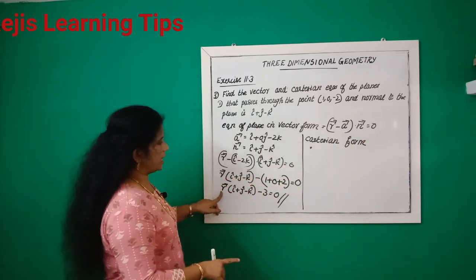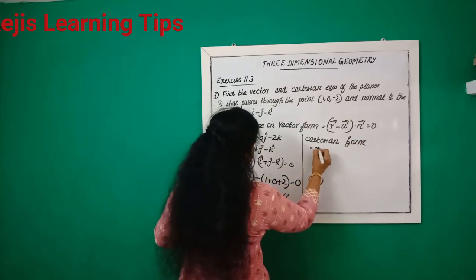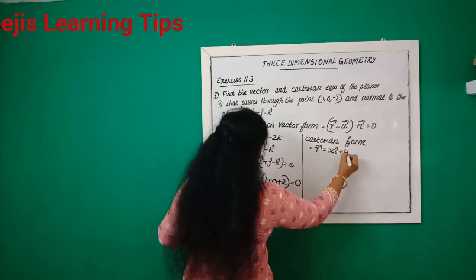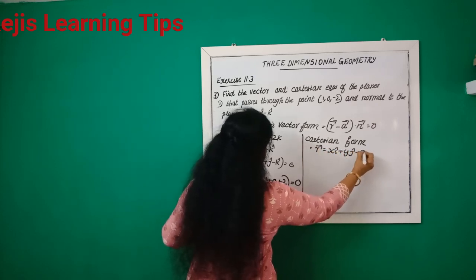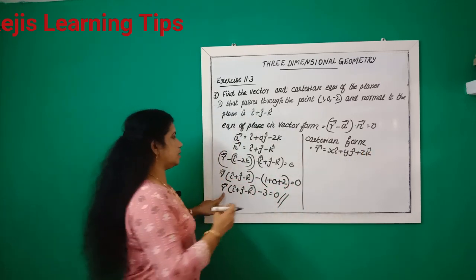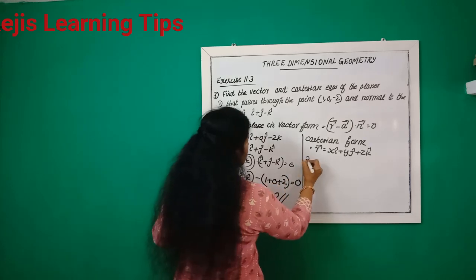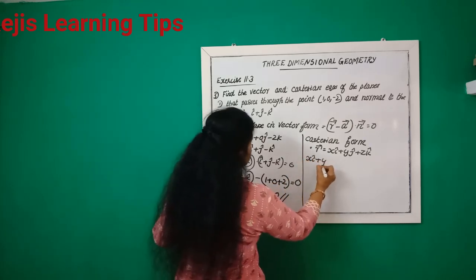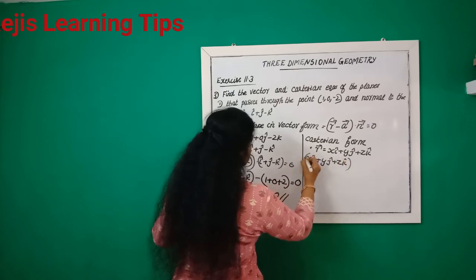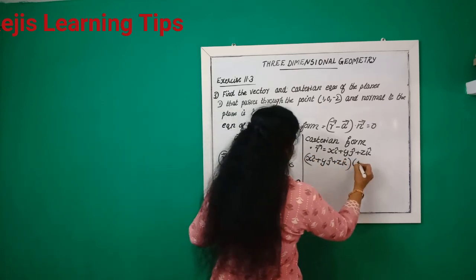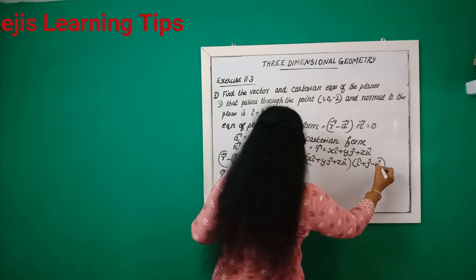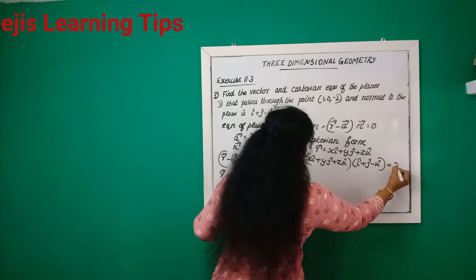Substituting i plus j minus k, that is equal to 3.